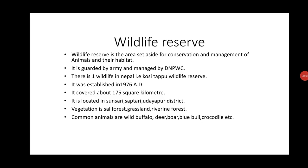Wildlife reserve is the area set aside for conservation and management of animals and their habitat. It is guided by army and managed by DNPWC. There is one wildlife reserve in Nepal: Koshitapu Wildlife Reserve. It was established in 1976 AD. It covers about 175 square kilometers. It is located in Sunsari, Saptari, and Udaipur districts. Vegetation is soil forest, grassland, river and forest. Common animals are wild buffalo, deer, boar, blue bull, and crocodile.